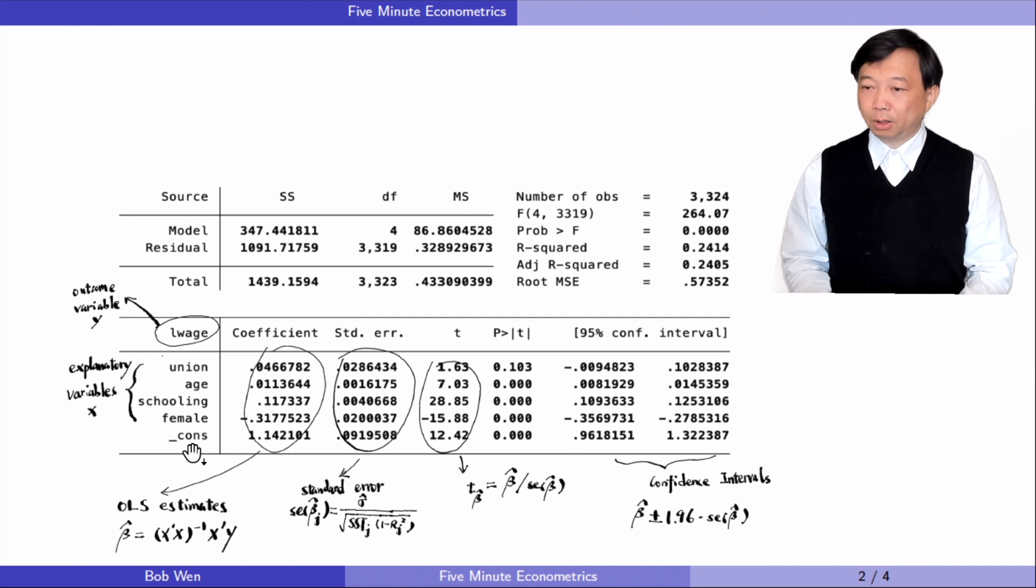The second column contains the estimated coefficients or the estimates. The formula for the OLS estimator is as follows.